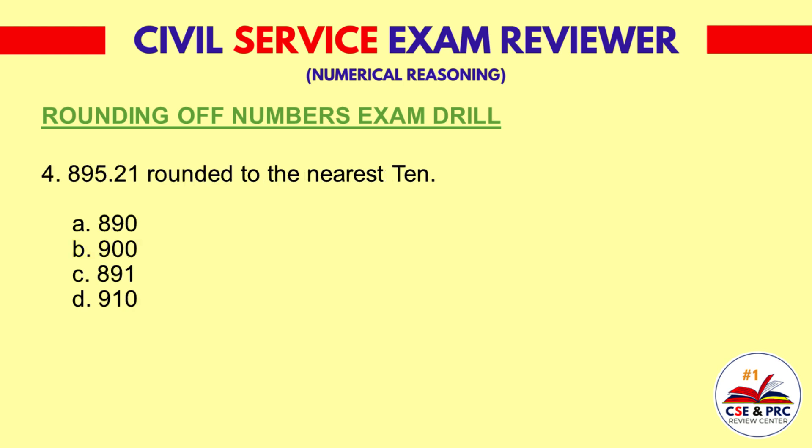Question 4: 895.21 rounded to the nearest ten. A. 890, B. 900, C. 891, D. 910. The answer is B: 900.